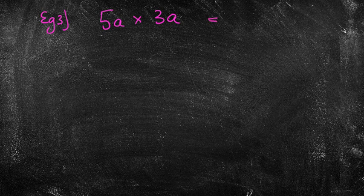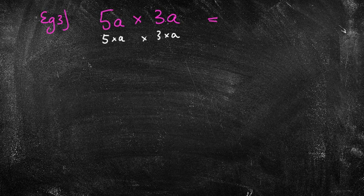What about this one? Example 3. 5a times 3a. What would you do there? Well again they're separated by the multiplication. 5 times a times 3 times a. You don't need to write the stuff in white, just the stuff in purple. 5 times 3 is 15. And then I've got a times a.